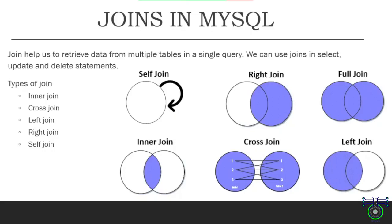We have right join as well. Right join means this will return all rows from the right table and matched rows from the left table — so it will just neglect the left part of your table, which you can see in this diagram. We have left join as well, the opposite of that — it returns rows from the left table and the matched rows from the right table.